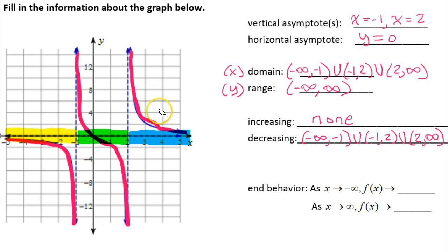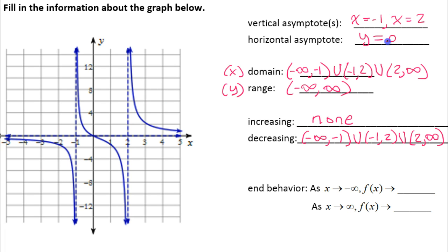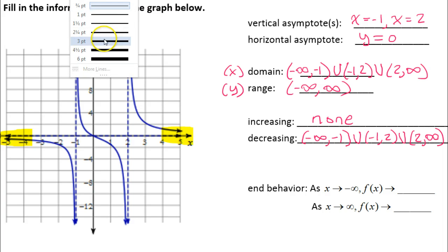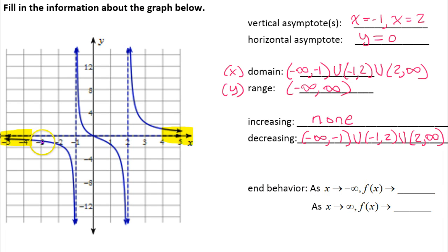Now let's talk about end behavior. End behavior is always going to match the horizontal asymptote — we have y equals zero. As x approaches negative infinity, we're going toward the far left, and we're approaching zero, the horizontal asymptote. As x approaches positive infinity, we go toward the far right, and we're again approaching zero. These are always going to match the horizontal asymptote.